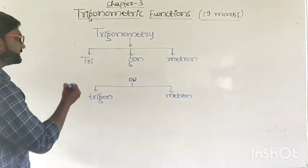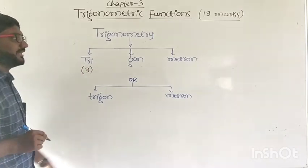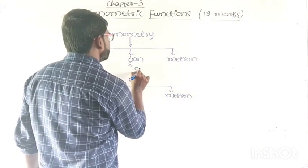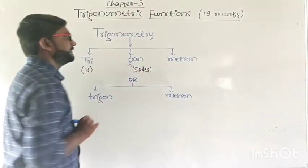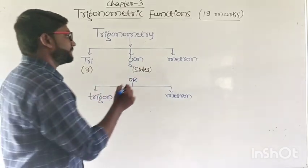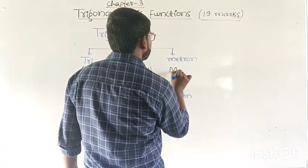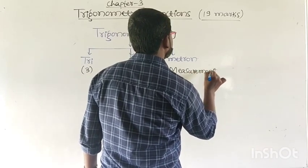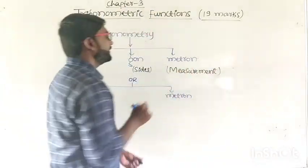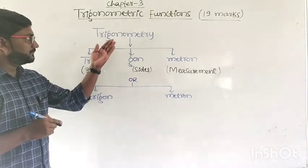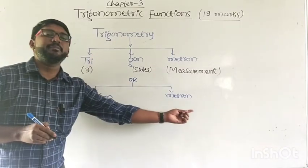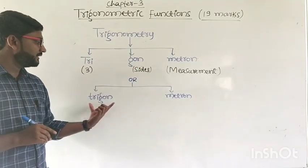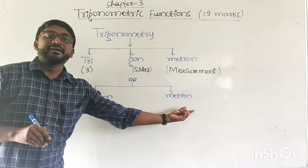Breaking it down: 'tri' means 3, 'gon' means sides, and 'metron' means measurement. Or this can also be written as 'trigon' and 'metron' — the word trigonometry is derived from the Greek words trigon and metron.